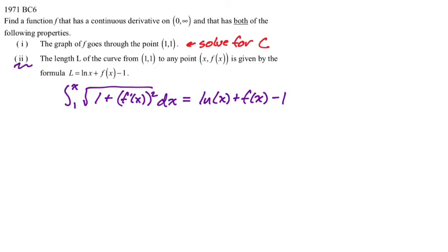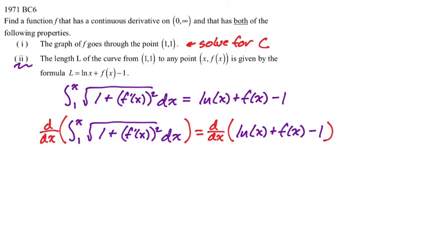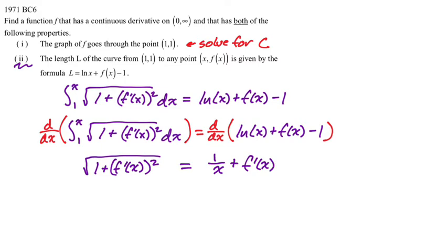This is an equation we can't really solve in its current state, but we can find the derivative. This now becomes a Second Fundamental Theorem problem — we take the derivative of both sides. On the left-hand side, using the Second Fundamental Theorem, we substitute in the upper bound (noting it should really be f prime of t and dt to avoid variable conflict), and multiply by the derivative of the upper bound, which is just 1. On the right-hand side, the derivative of natural log of x is 1 over x, the derivative of f of x is f prime, and the derivative of 1 is 0.